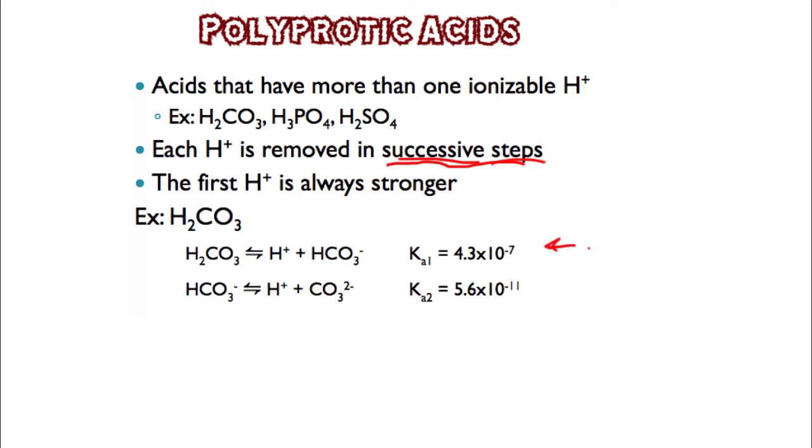Keep in mind that the first one is always stronger than the second one. The definition of an acid we're focusing on is that it loses a hydrogen ion. The one that loses the hydrogen ion easiest is considered the strongest. So Ka1 would be a larger number than the second one because that one's easier to remove.